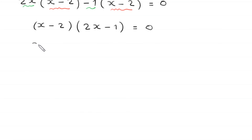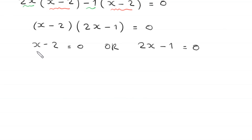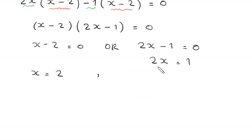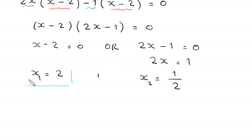From here, either x minus 2 equals 0, giving x equals 2, or 2x minus 1 equals 0. Adding 1 to both sides gives 2x equals 1, and dividing by 2 gives x equals 1 over 2. So we have two solutions: x equals 2 and x equals 1 over 2.